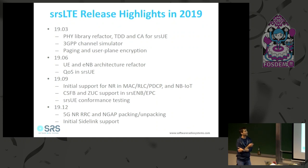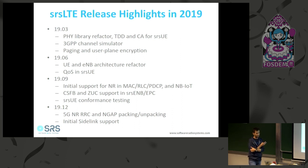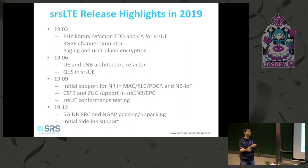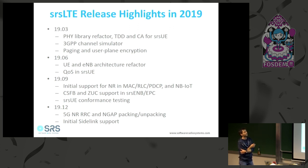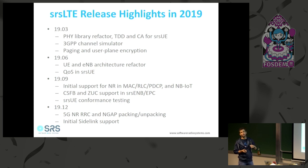In 2019 we had three releases following a three-month release cycle. In early 2019 we added TDD — time division duplexing — support, carrier aggregation to the UE, and a 3GPP channel simulator so you could emulate a channel as received from the UE or transmitted at the eNodeB.